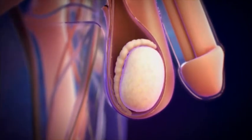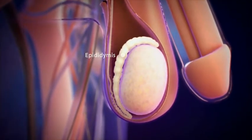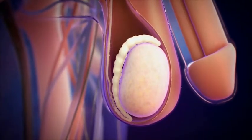On top of the testes is the epididymis, a coiled tube that collects sperm from the testes and provides an environment for sperm to mature.